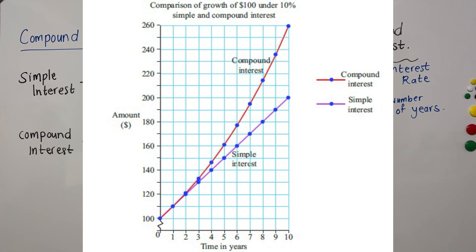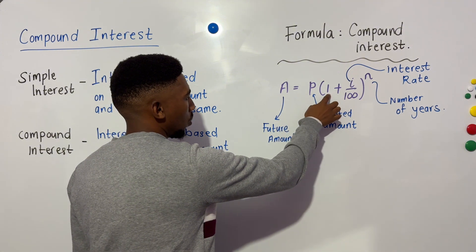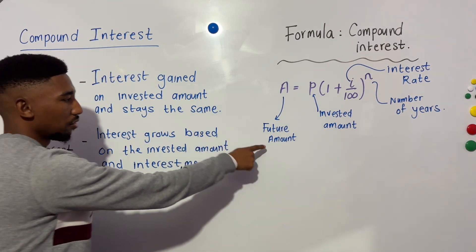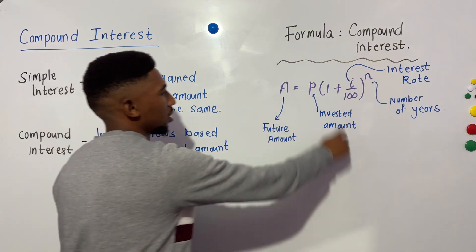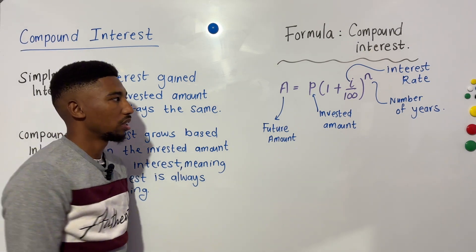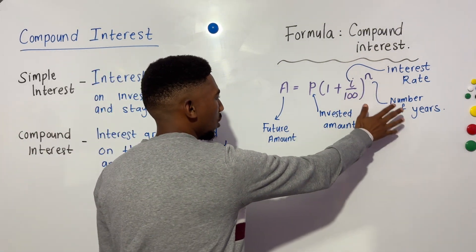Compound interest is exponentially increasing compared to simple interest which remains the same. This increases your investment amount constantly, whereas with compound interest it increases based on the previous value, so you make more as you go. The formula for compound interest is: A equals P brackets one plus i over 100 close bracket to the power of n. A is the future amount, P is the invested amount, i is the interest rate (e.g. 15 percent or 12.5 percent), and n is the number of years.